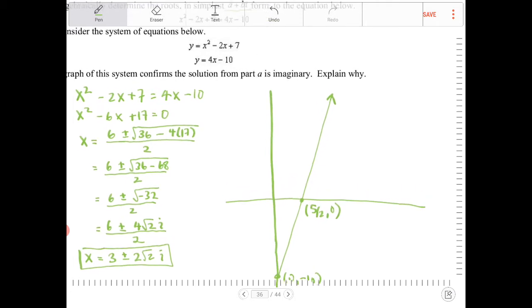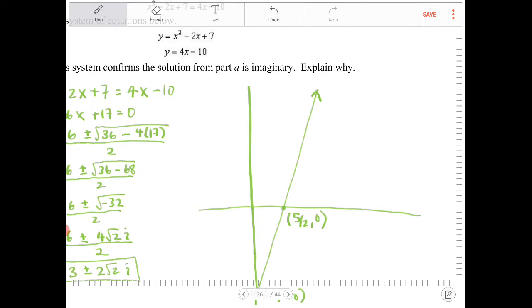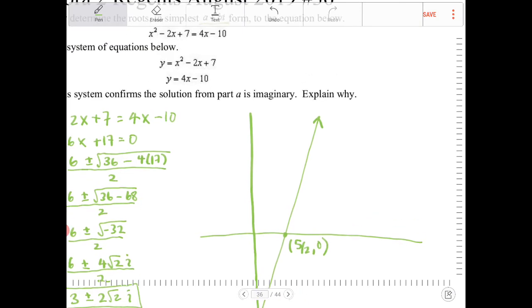And then the x squared minus 2x plus 7. So where will that be? So I have x squared minus 2x plus 7. What I'm going to do is I'm going to rewrite this in vertex form. So to do that, what I'm going to do is I'm going to complete the square by adding 1. And if I add 1, I have to also subtract 1.